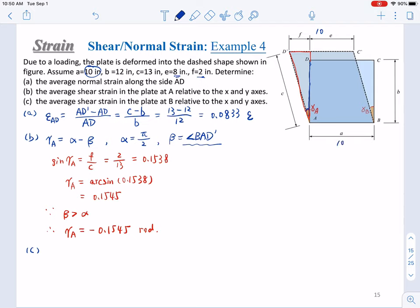So 10, 10 equal to each other, meaning that AD prime and BC prime, they're parallel with each other. So from here, you can conclude that gamma B equals gamma A in magnitude. But how about the sign?